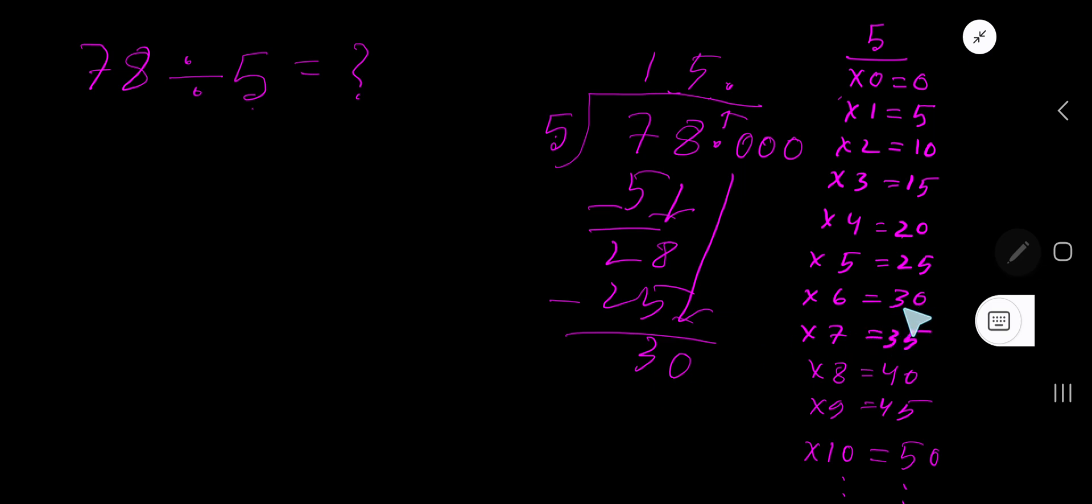5 goes into 30 how many times? 5 goes into 30, 6 times. 6 times 5 is 30. Subtract to get 0. So our answer is 15.6.